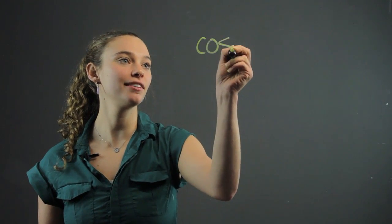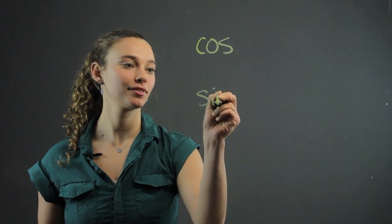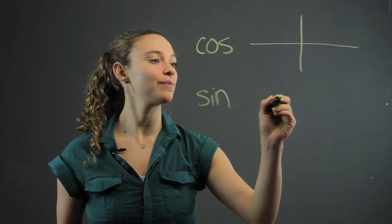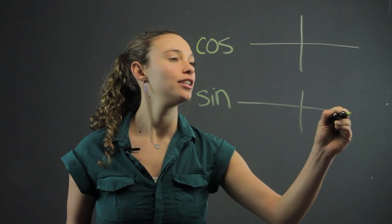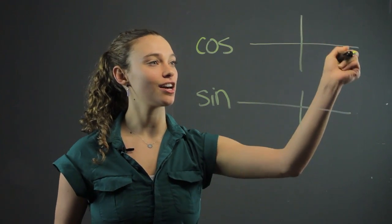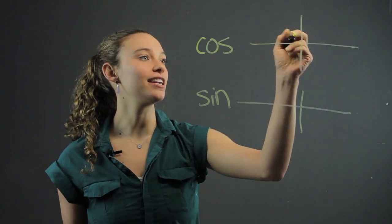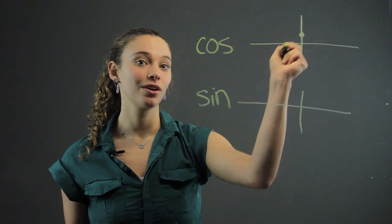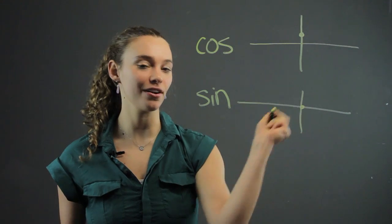We'll look at today the two basic trig functions, cosine and sine. Trig functions look like they're in waves, right? So they're going to be waves like this on the graph. For cosine, it intercepts the graph at 0, 1, whereas at sine, it's at 0, 0.